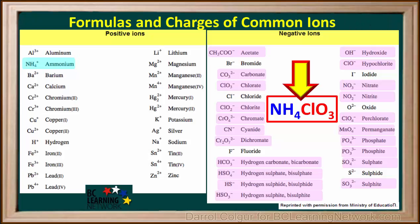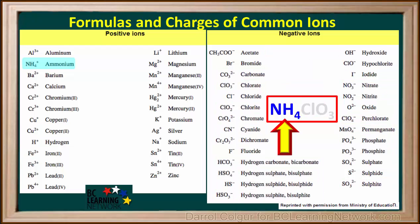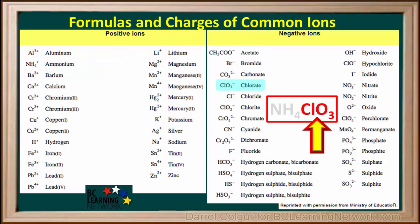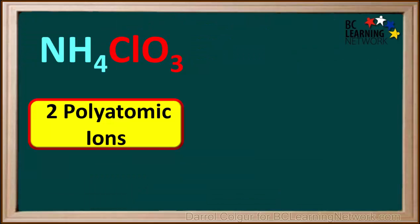The formula we're working with is NH4ClO3. Looking on the table, we see that NH4 in the formula comes from the positive polyatomic ion ammonium, NH4⁺, and ClO3 in the formula comes from the negative polyatomic ion chlorate, ClO3⁻. So the formula NH4ClO3 contains two polyatomic ions: NH4 or ammonium, and ClO3 or chlorate.